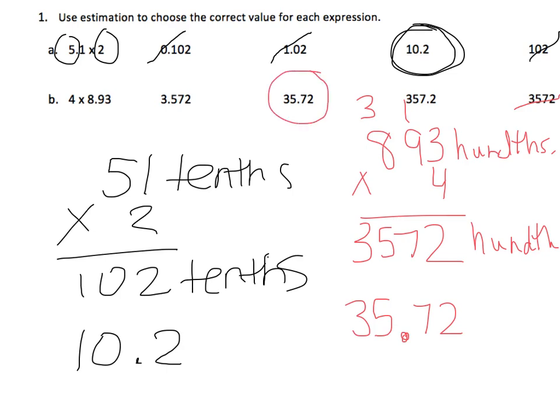Our answer right here. Again, we can check for reasonableness and know that 4 times 8 is 32, so it cannot be 3. It cannot be 357. Most reasonable answer is our product.